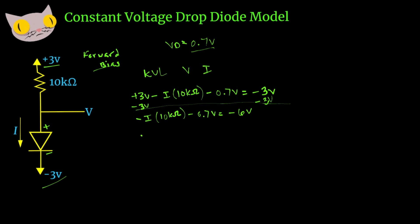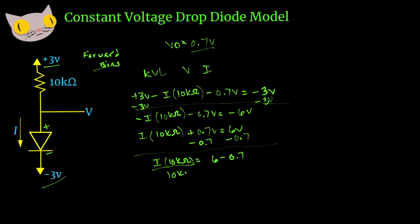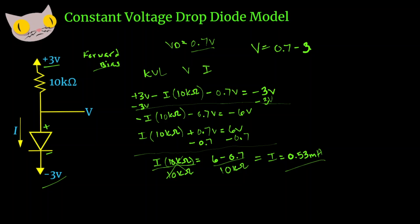Let's go ahead and change the signs to make it a little easier — we can make everything positive. Now subtract 0.7 on both sides and divide by 10k on both sides to get our current by itself. Solving for this, we get our current to be about 0.53 milliamps. And for our voltage, we just need to subtract 3 from 0.7, which gives us negative 2.3 volts.